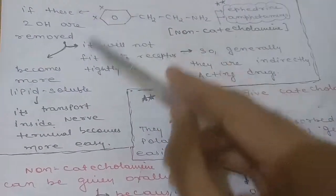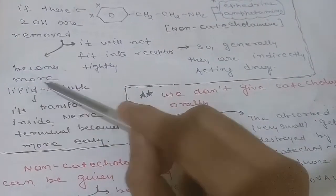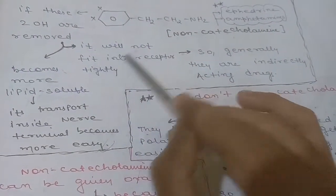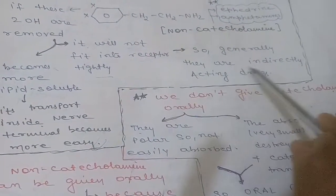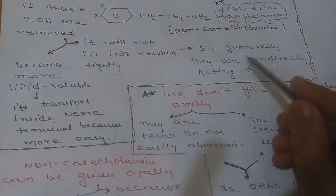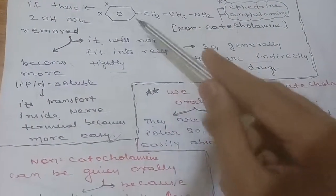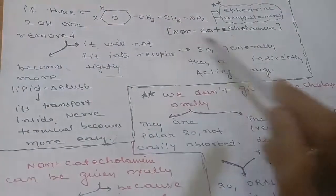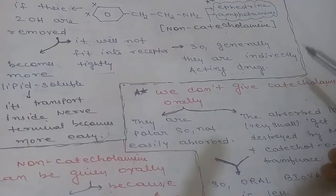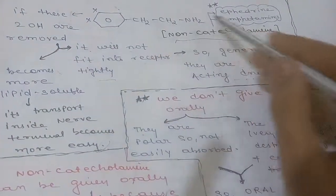If the two OH groups are removed, polarity will decrease and the compound becomes more lipid-soluble, making its transport inside the nerve terminal easier. However, it will not fit into the receptor tightly, so these drugs generally act as indirectly acting drugs. Removal of the OH groups reduces the drug's affinity for its receptor, so these are non-catecholamines.